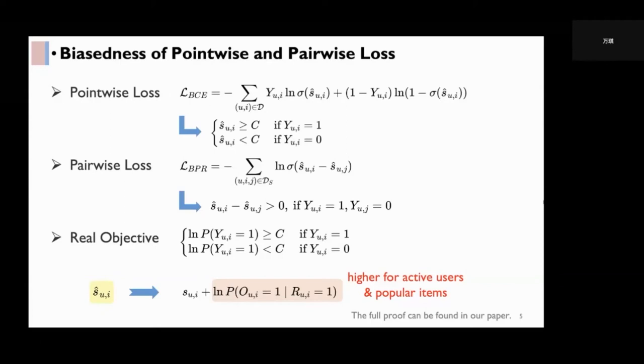BPR models the user preference on two items. It encourages the prediction of the positive item to be higher than that of the negative item for each user.